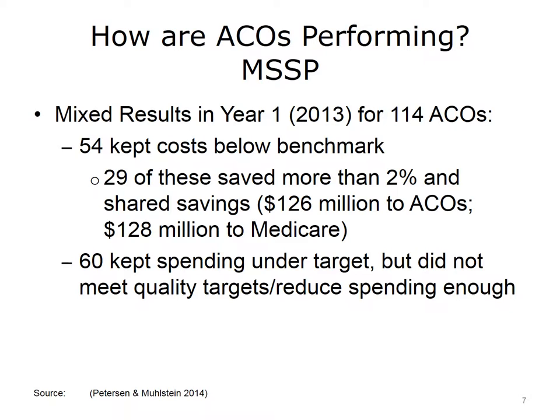We are just now beginning to see how ACOs are performing. A study published in 2014 looked at the largest ACO program, the Medicare Shared Savings Program, and found mixed results among 220 ACOs. About half met quality benchmarks and kept spending below targets. 29 of these ACOs saved more than 2% and were eligible for sharing savings, receiving $126 million in savings and generating $128 million in total savings for Medicare. Slightly more ACOs, 60, did not meet their quality benchmarks or did not reduce spending enough to share in savings, though they kept total spending under the target level. In subsequent years, results have been fairly consistent, with overall spending reduced and quality indicators improving.